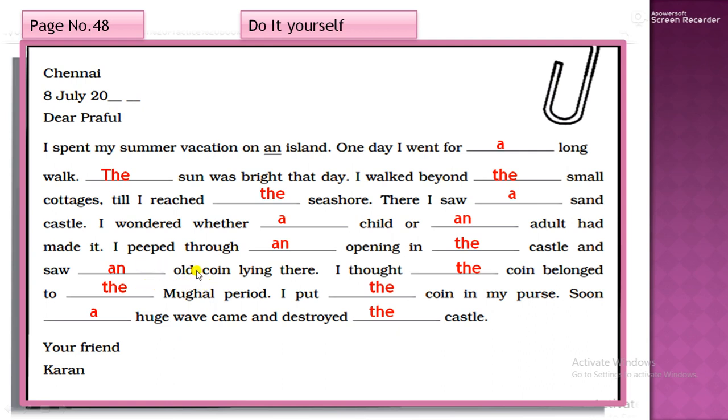Again, only vowels and consonants are there. So, coin lying there. I thought - spelling is T-H-O-U-G-H-T. But you will not say you. Think, thought, thought. So I thought the coin. This particular coin. Already mentioned. The things which are mentioned second time, we use article The. Belong to The.